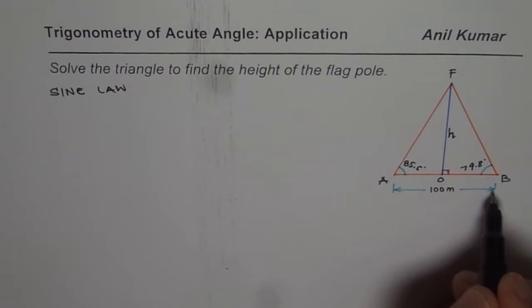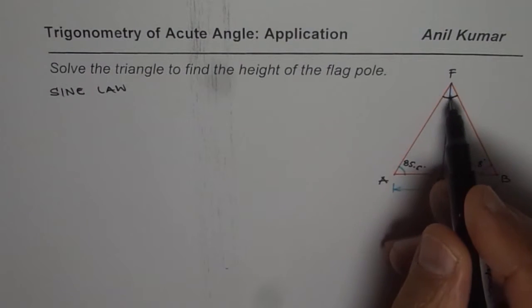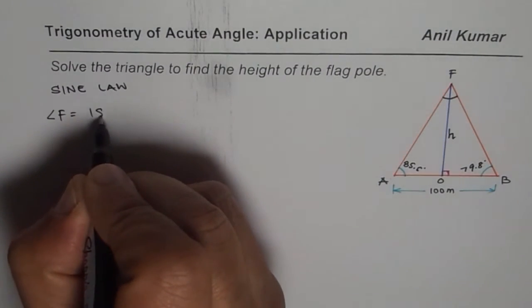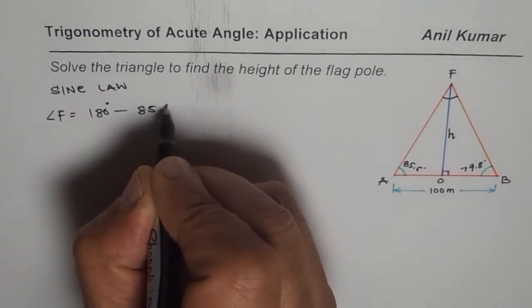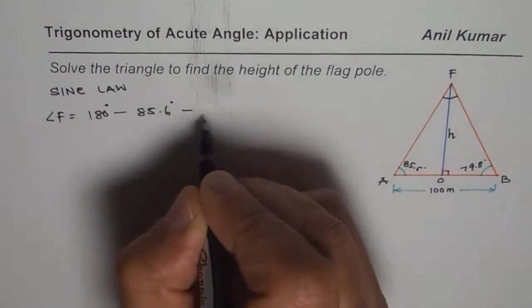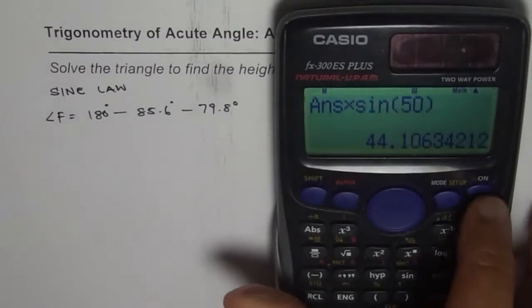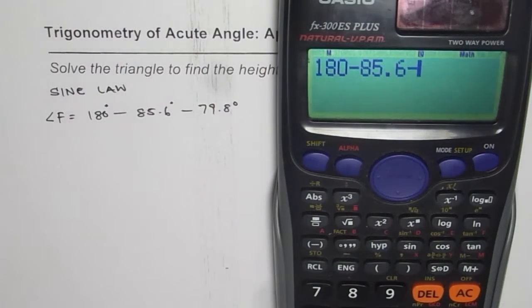To use sine law I know this distance. I should know the angle opposite to it to solve it. Now that is known to me. I can say angle F is equal to 180 degrees take away these two angles. So we'll write this as 180 minus 85.6 minus 79.8.